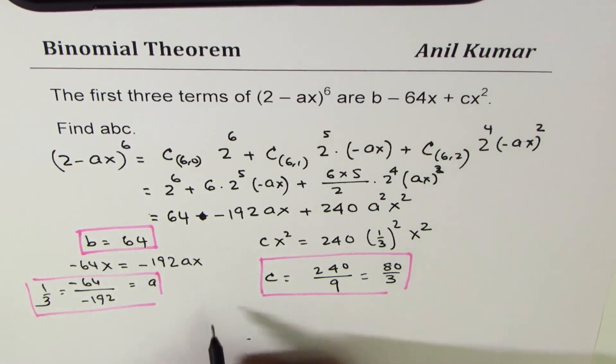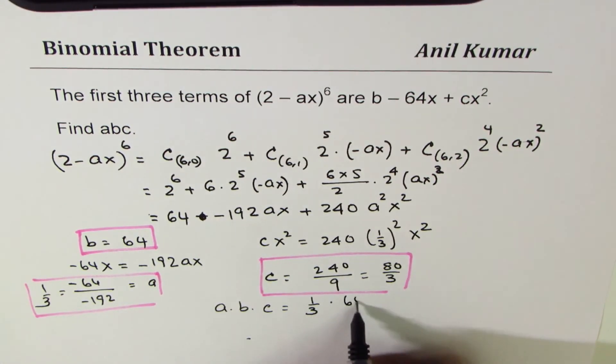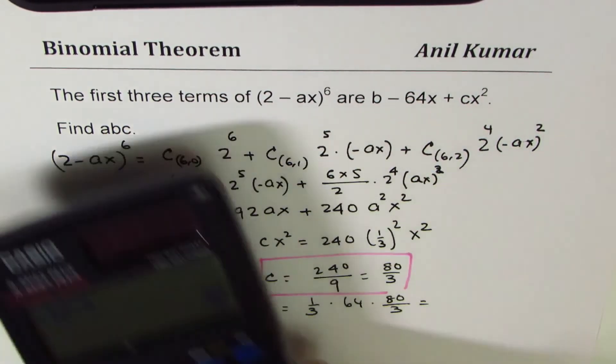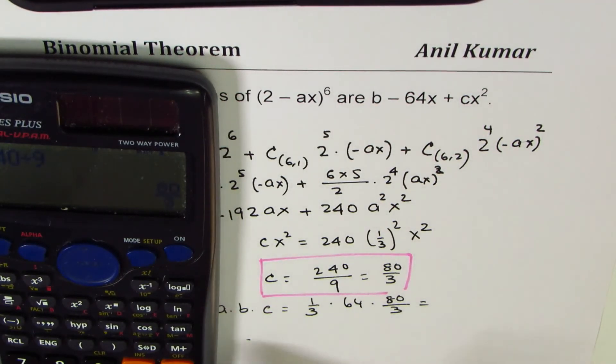b as 64, a as 1/3, and c as 80/3. So we need to find their product, a × b × c, which means 1/3 × 64 × 80/3.